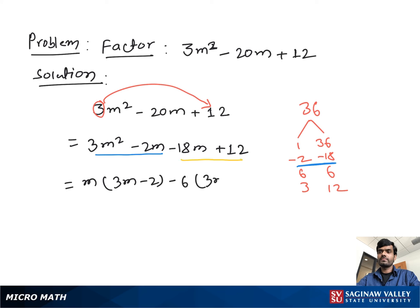We have 3m minus 2. From both sides we take 3m minus 2 as a common. And we have remaining m minus 6. And this is our final answer.